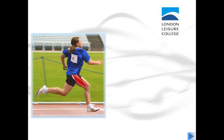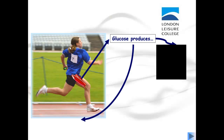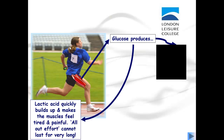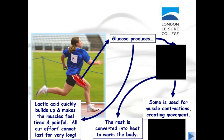Looking at a sprinter: glucose produces energy but also leads to lactic acid quickly building up, making the muscles feel tired and painful, so all-out effort cannot last very long. Some of the energy is used for muscle contractions to create movement, and the rest is converted into heat to warm the body.